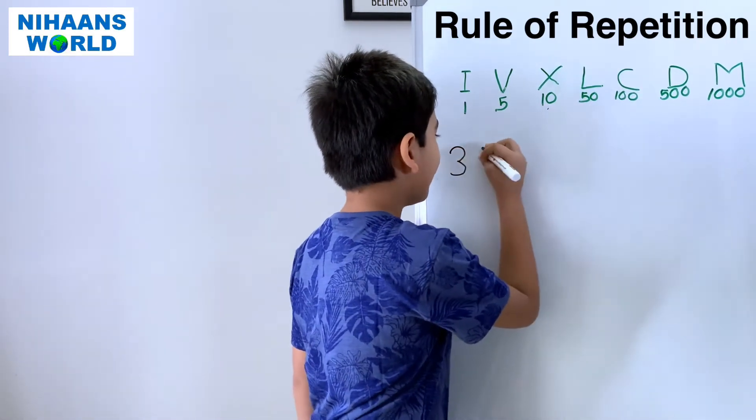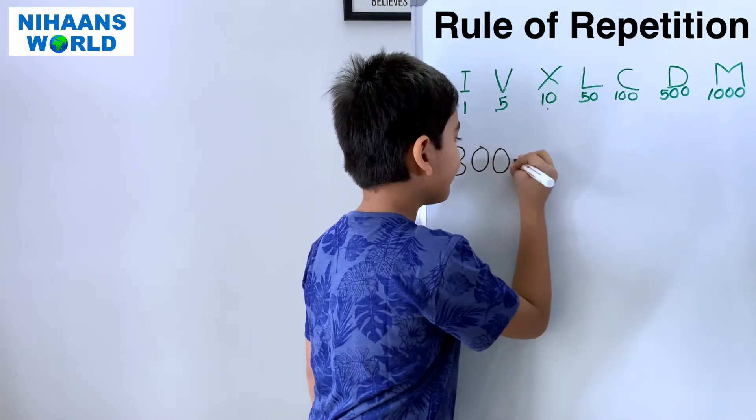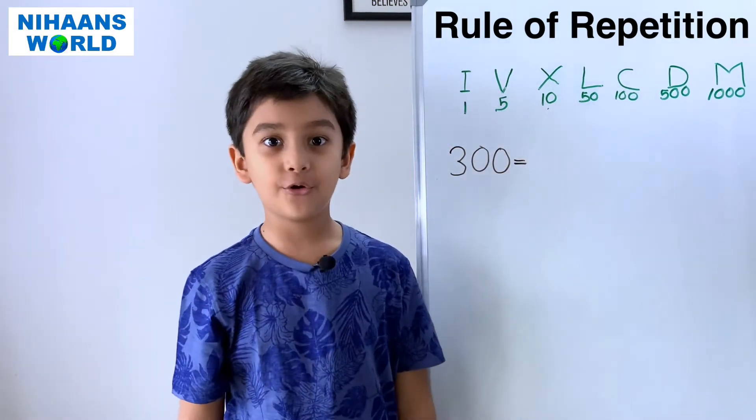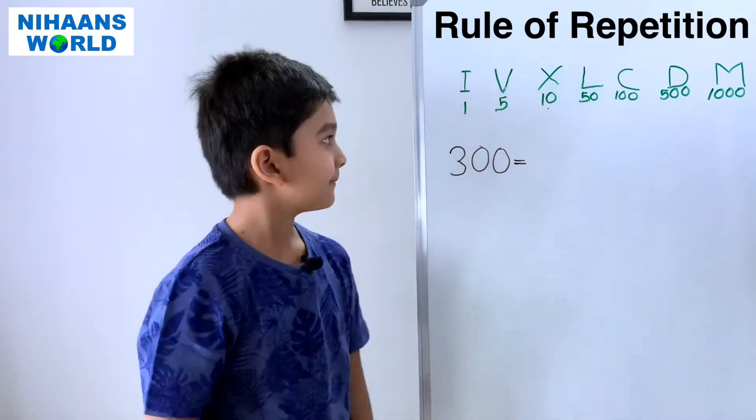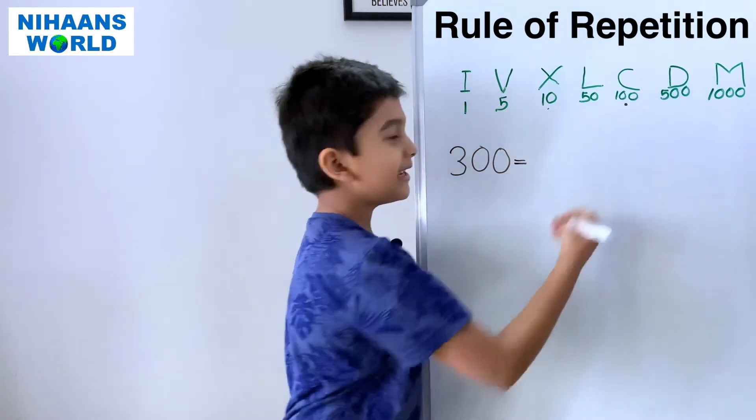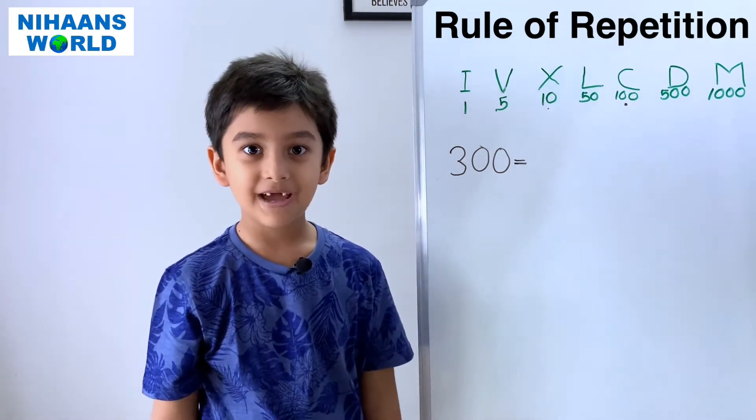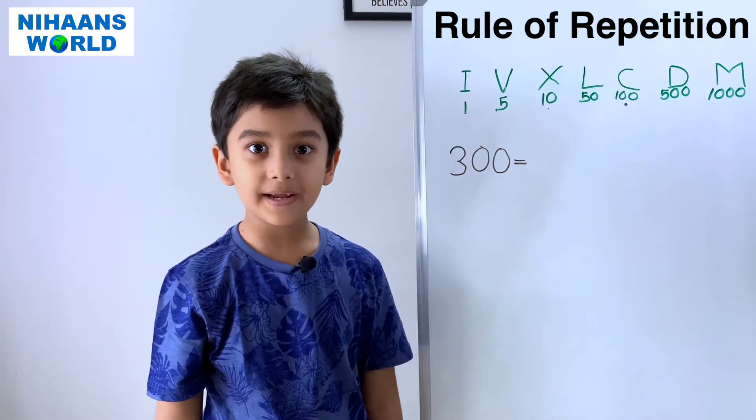Three hundred. So, how do we write one hundred in Roman numerals? C. So, we have to write C three times.